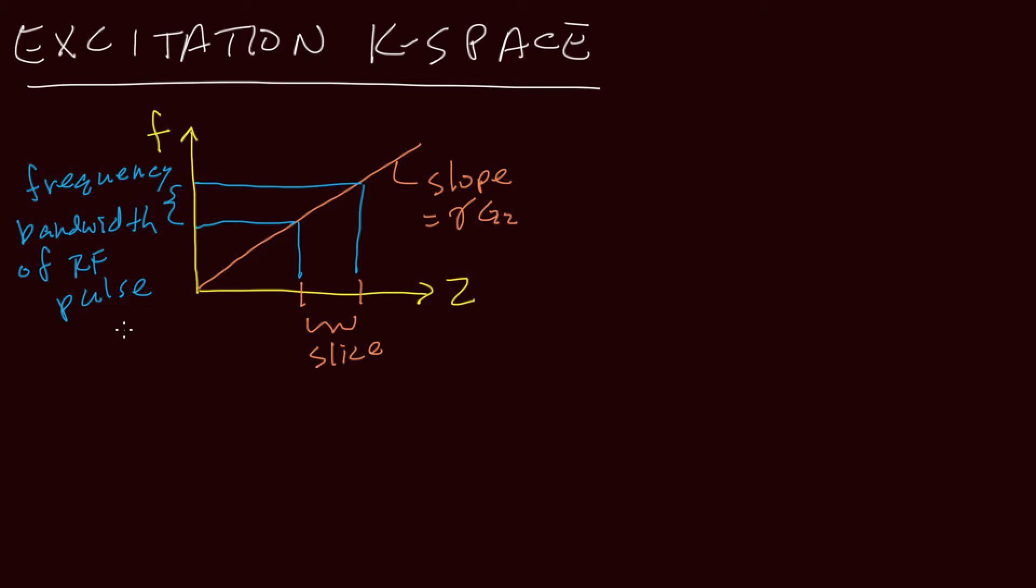This mapping tells you what band of frequencies must be excited and therefore something about the required frequency content of the RF pulse. Since the frequency content of an RF pulse is given by the Fourier transform of the time-domain RF waveform itself, this suggests that the slice profile is closely related to the Fourier transform of the RF pulse. Let's work our way towards this expected conclusion in some detail.